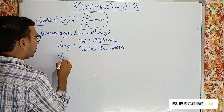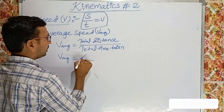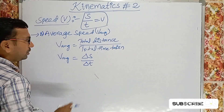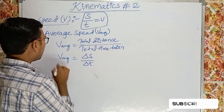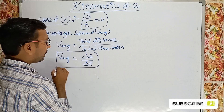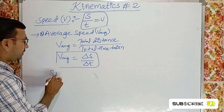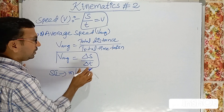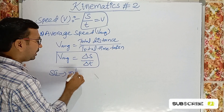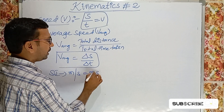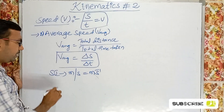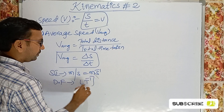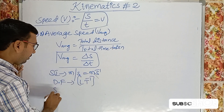V_average equals total delta S divided by delta t. Total distance covered per total time taken is called average speed. The unit of speed is meters per second, or you can write m·s⁻¹. The dimensional formula is LT⁻¹. Speed is a scalar physical quantity.